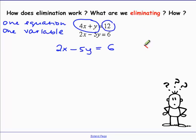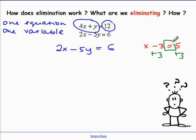For example, if you're solving x minus 3 equals 5, you add 3 to both sides. Since 3 is equal to 3, we can add it to both sides and things remain equal. So since 4x plus y and 12 are both equal to each other, I can add 4x and y to the left side, and add 12 to the right side.